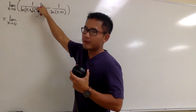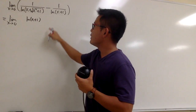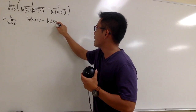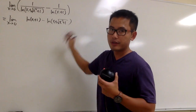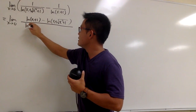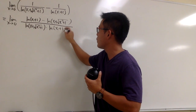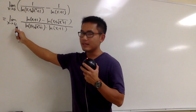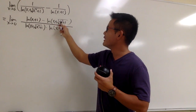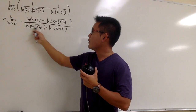For the first fraction, we multiply the top and bottom by ln(x + 1). For the second fraction, we multiply the top and bottom by ln(x + √(x² + 1)). So on the numerator we have ln(x + 1) minus ln(x + √(x² + 1)), and on the denominator we have ln(x + √(x² + 1)) times ln(x + 1). When x approaches 0, both ln terms become ln(1) = 0, so the numerator is 0 and the denominator is 0 times 0 — we have a 0/0 situation.